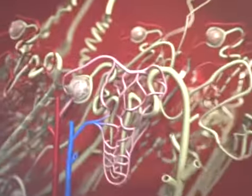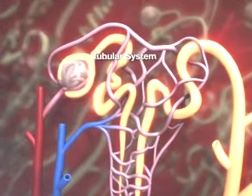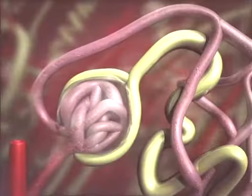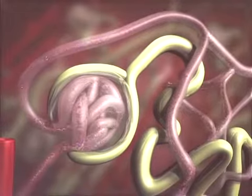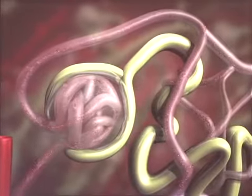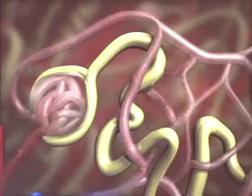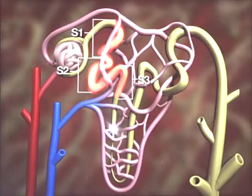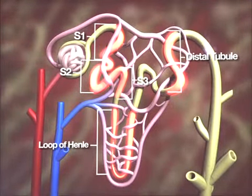Renal filtration and reabsorption are carried out in the nephron, the structural and functional unit of the kidney. The nephron consists of a capillary network called the glomerulus and a tubular system in which substances either are reabsorbed from the glomerular filtrate or remain in the tubules, where they are collected as waste products to be eliminated in the urine. The blood that enters the glomerulus is under relatively high pressure, which forces water, salts, glucose, and other small metabolites into the surrounding Bowman's capsule. The filtrate then passes through the S1, S2, and S3 segments of the proximal tubule, the loop of Henle, and the distal tubule before leaving the nephron and entering the collecting duct system.